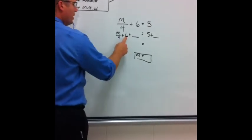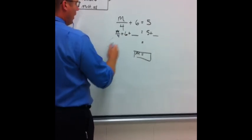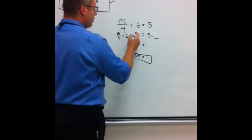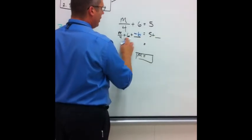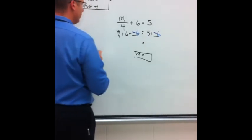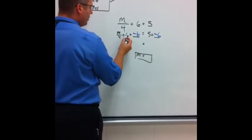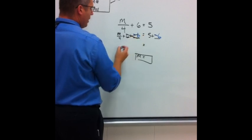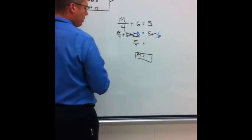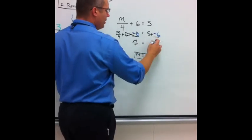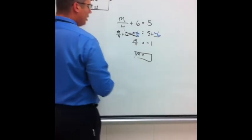I need to get rid of the added number first. The number that is not multiplied. Opposite of 6 is negative 6. Opposite of 6 is negative 6. On the left, 6 and negative 6 give me nothing. I still have left n divided by 4. On this side, 5 plus negative 6 is negative 1.